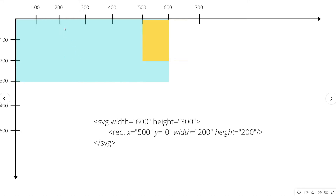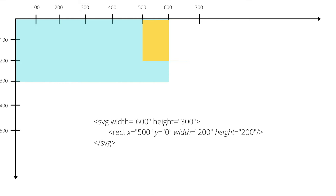What if I move the rectangle 500 pixels to the right? The top left corner of this rectangle is now at x=500, and the width is 200. But here we only see 100 pixels of width, because the other half of this rectangle is lying outside the viewport. You can only see half of this rectangle — just like the window concept: anything outside the window frame is not visible, same thing here for this yellow rectangle.